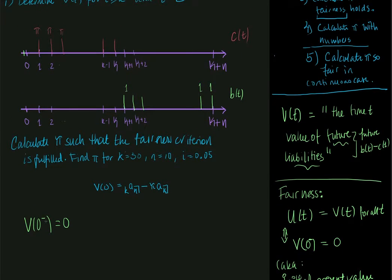And what does this v(0-) mean? Well it means if we stand at a time just right before 0, then what is the present value of all future net benefits? So the present value of all future benefits minus the present value of all future contributions.